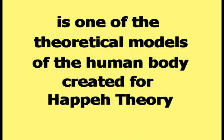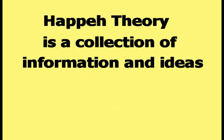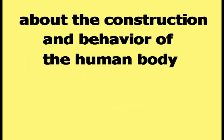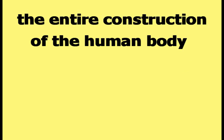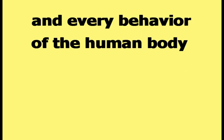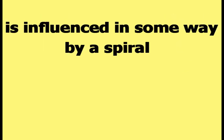This video is about the spiral view of the human body. The spiral view of the human body is one of the theoretical models created for Happy Theory, which is a collection of information and ideas about the construction and behavior of the human body. According to the spiral view, the entire construction and every behavior of the human body is influenced in some way by a spiral.